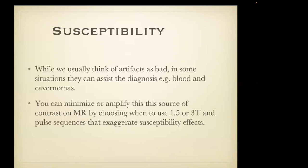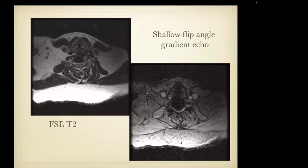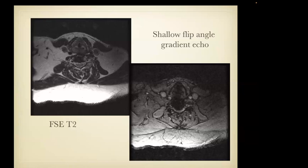When looking for cavernomas in the brain or for hemorrhage after trauma — shear hemorrhages at the gray-white interface — these are maximized using 3 Tesla and pulse sequences that exaggerate susceptibility. On a fast spin echo T2 scan of the spine I can see the spinal cord and subarachnoid space all around the cord, with perhaps little compromise of the canal but no compression. But on a shallow flip-angle gradient scan the canal looks much narrower — this is the susceptibility artifact from hardware causing 'blooming,' which is characteristic of susceptibility effect.